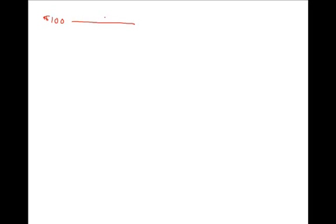For instance, if I had $100 today and I put it in an account for a single year and interest was paid annually at the rate of 4%, at the end of one year I'd have $100 times 1 plus the rate of 4% to the power of one year, and that would give me $104.